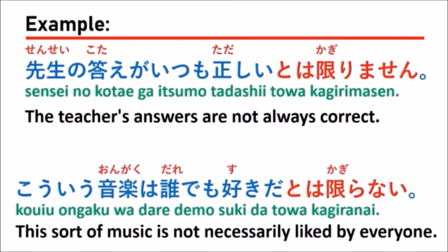In this sentence, they use とは限らない. What we should pay attention to is the word 好き — 好き is a na-adjective. So after the na-adjective, you should follow with だ, and after that とは限らない. This gives us 好きだとは限らない.